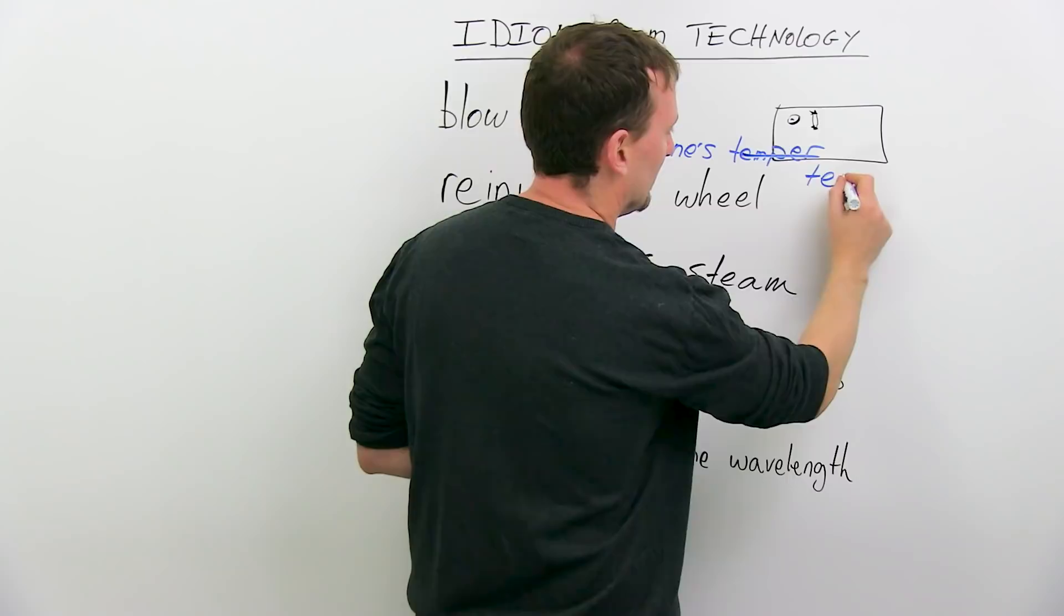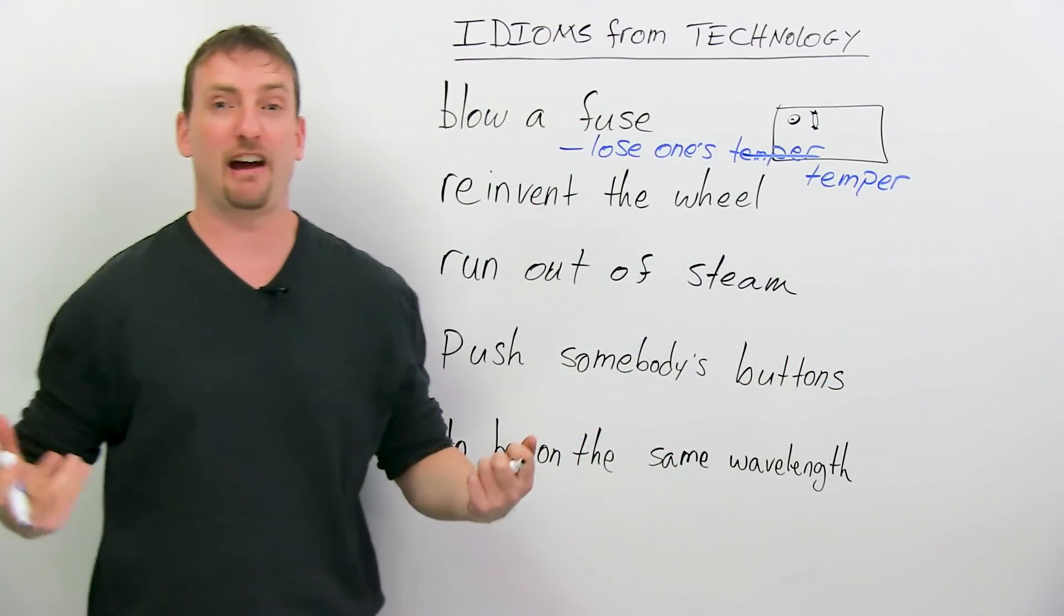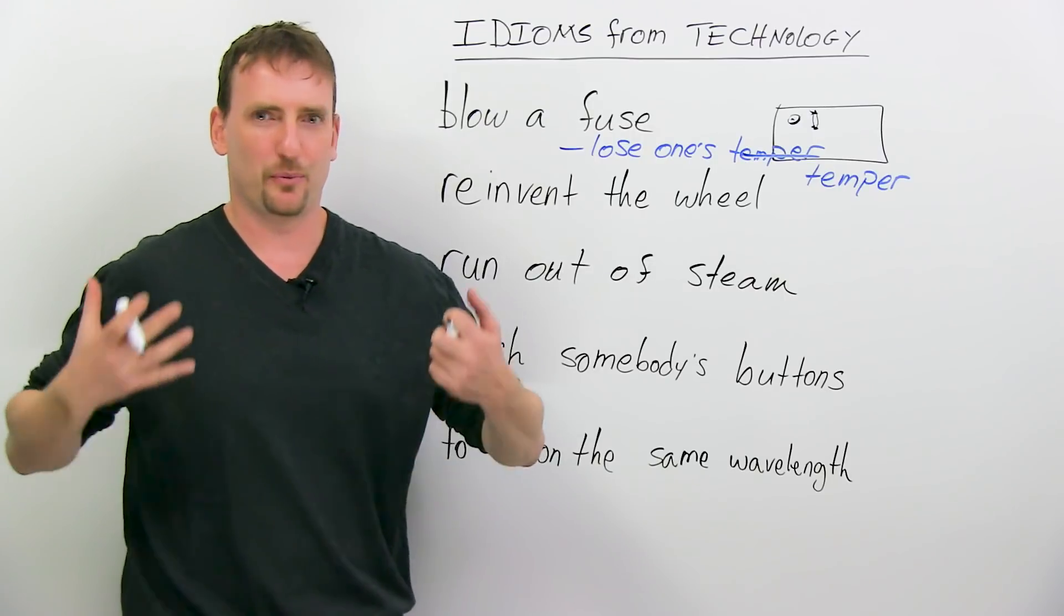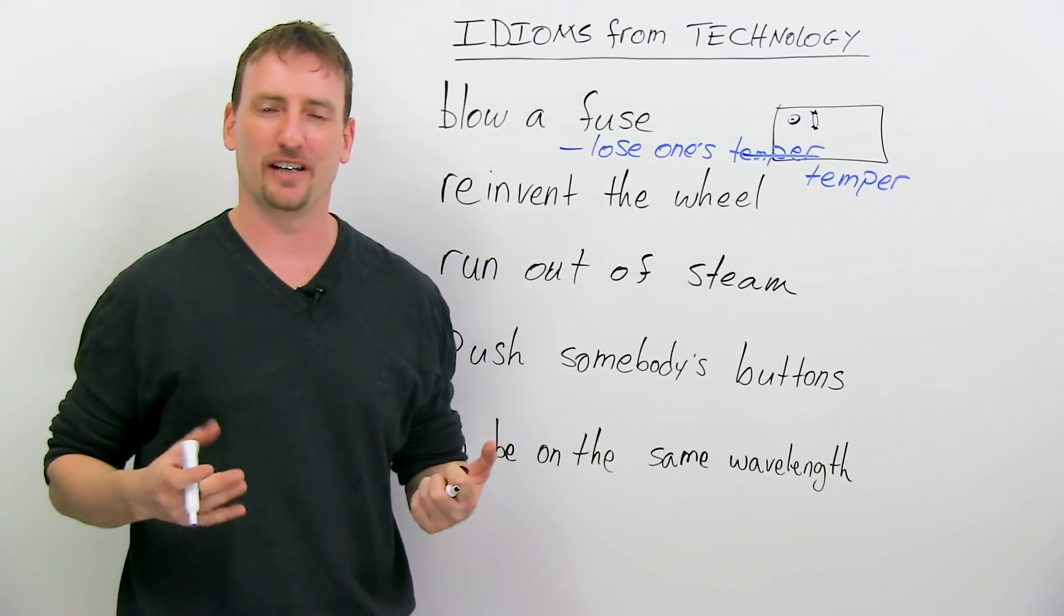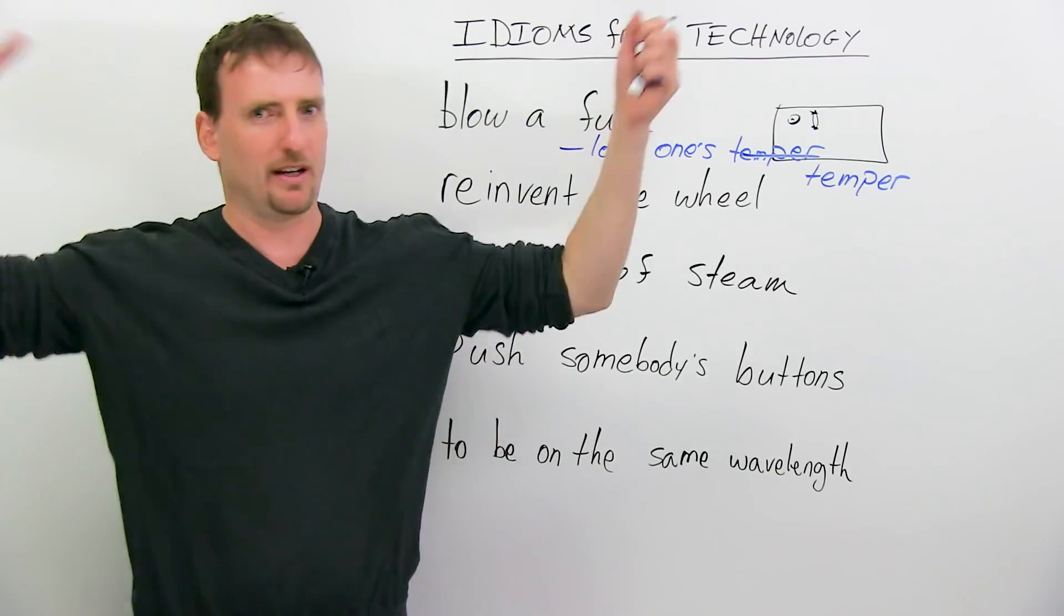To lose one's temper is to get super angry, super fast, with no sense of control. So, some people, like, you just say one wrong word and they blow up, like they don't have no control and they get so angry and you're not really sure what happened.